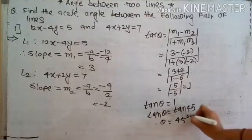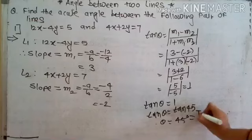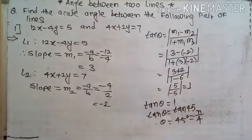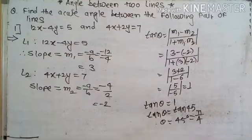In radians, 45 degrees converts to pi by 4. So the acute angle between the lines is 45 degrees or pi by 4.